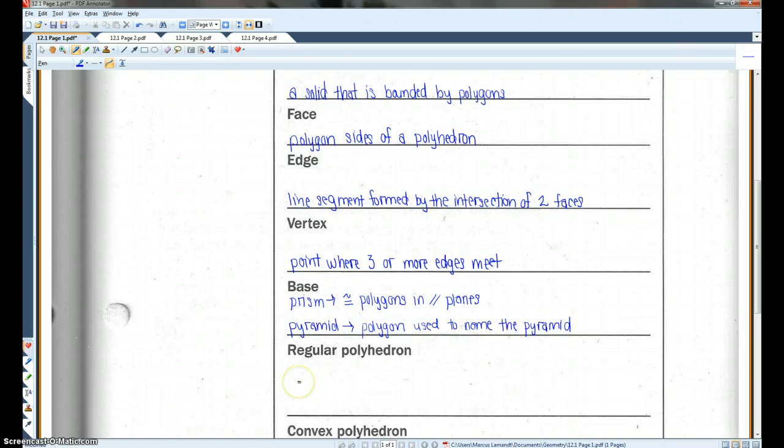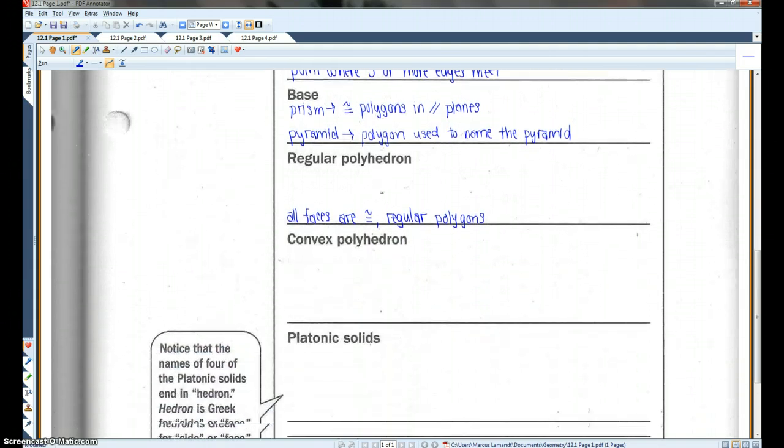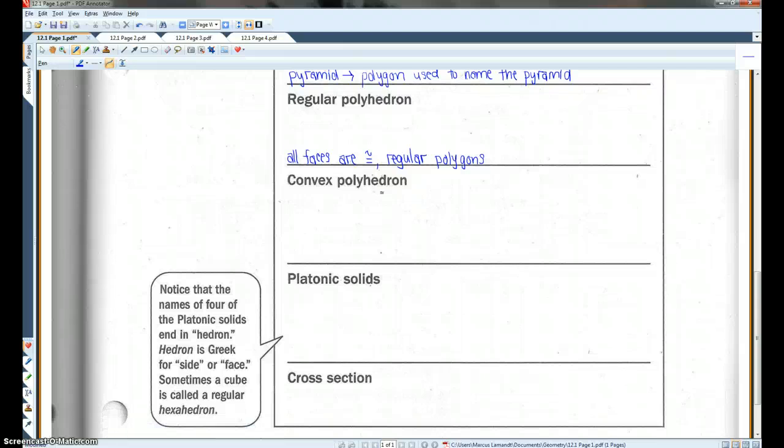A polyhedron is a regular polyhedron if all of its faces are congruent, regular polygons. Convex and concave polyhedra are very similar to convex and concave polygons. Basically, if all the vertices are facing out, it's a convex polyhedron.